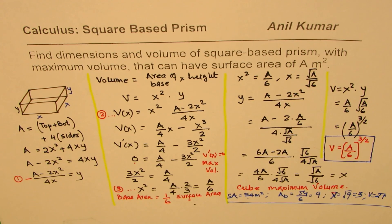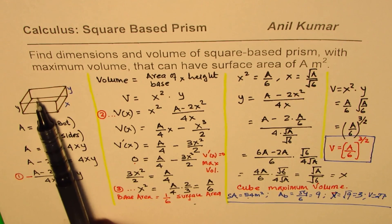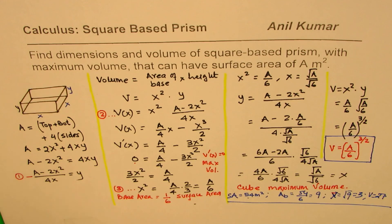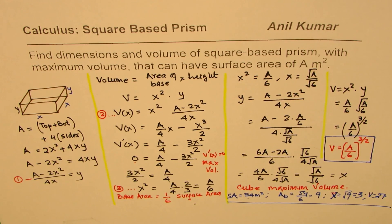I hope that really helps. I'd like you to go through this derivation. We'll take up another one with open top — this was with closed top, six surfaces. You can do the same exercise for an open top, which will have five surfaces, and see how volume is related with the surface area. I'm Anil Kumar, and I hope that helps. Thank you and all the best.